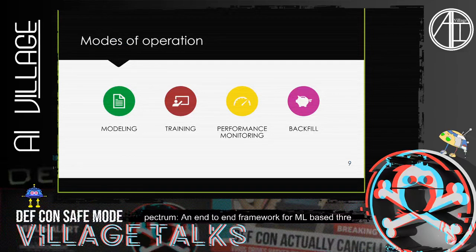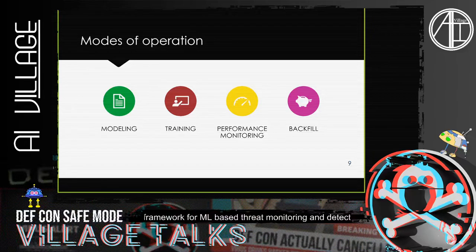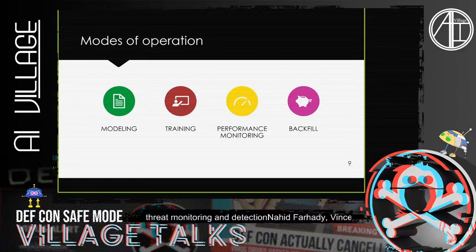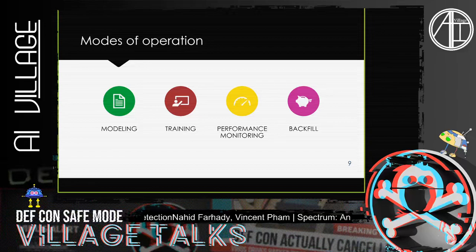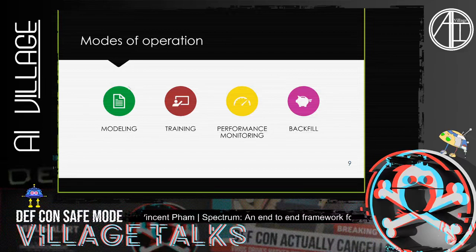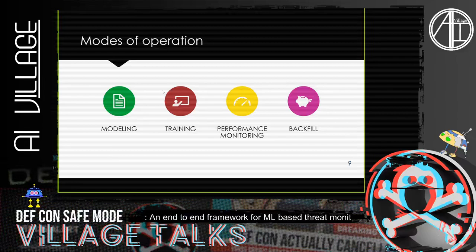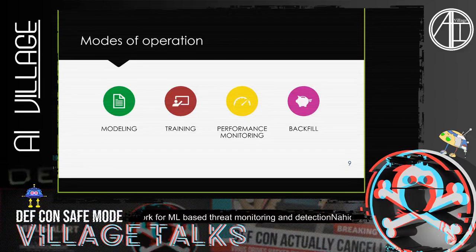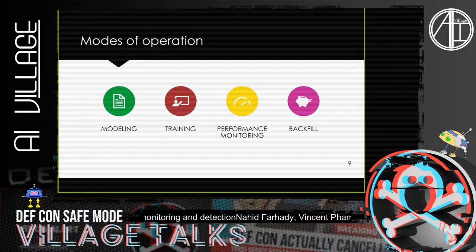Another design consideration in this proposed framework is modes of operation. Like any other machine learning system, we have a modeling phase — a normal running job that executes the trained model against real-time data and extracts results, run six times a day or more per user's request. We also have a training phase where we only train the models. We have several baseliners and classifiers for user and entity behavior monitoring — comparing employees against their own behavior, their peers' behavior, or using role-based anomaly detection.